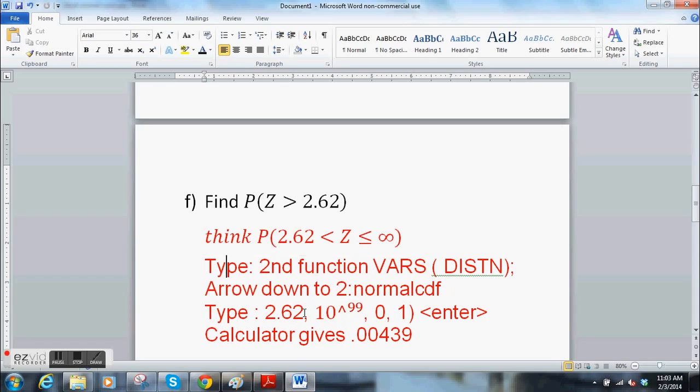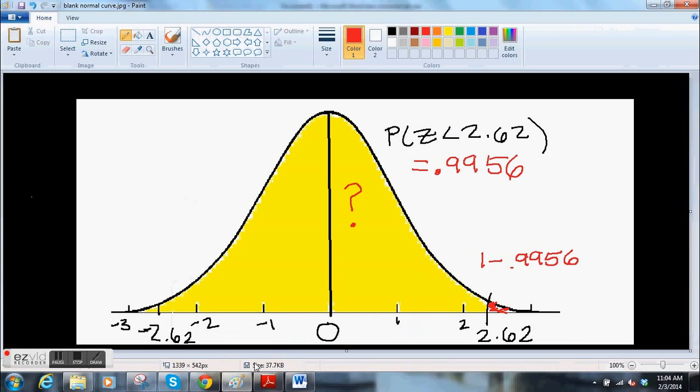Hit enter. Now we're typing in the lower bound, which is 2.62. Upper bound, which is 10 raised to the 99. That's positive, so we don't need to say 1 times it. The mean, which is 0, and the standard deviation, which is 1. Close the parentheses here. And then hit enter, and your calculator gives you this. 0.0044, essentially. So that little area there is 0.004.